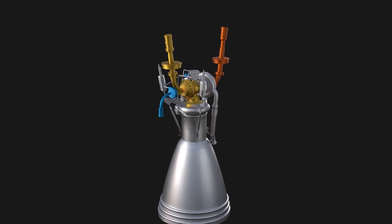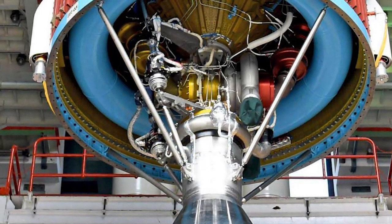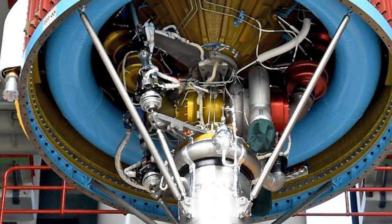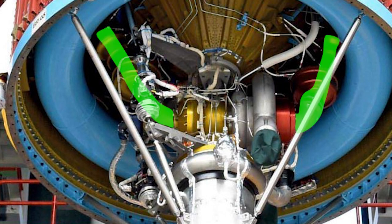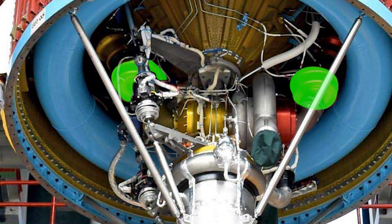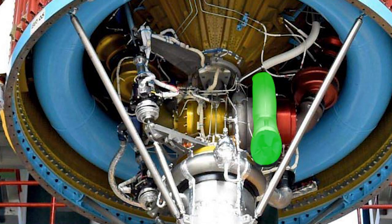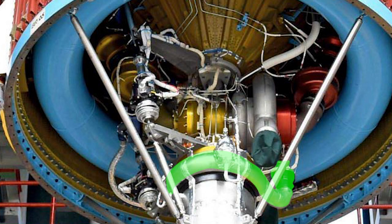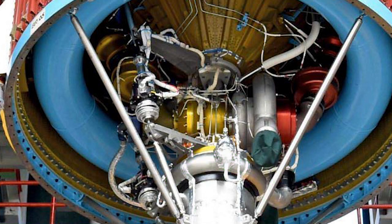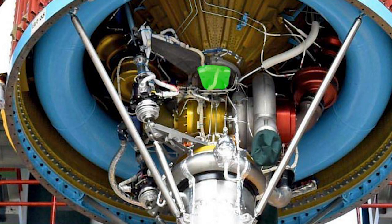You can see some of the components that we discussed in this actual photo of the Vikas engine on the second stage of PSLV. Here are the main lines that bring fuel and oxidizer. The pogo accumulator devices. Also you can see the exhaust line of the gas generator, the high pressure fuel manifold, turbine and pump casing, the plate where the engine is mounted to the rocket.